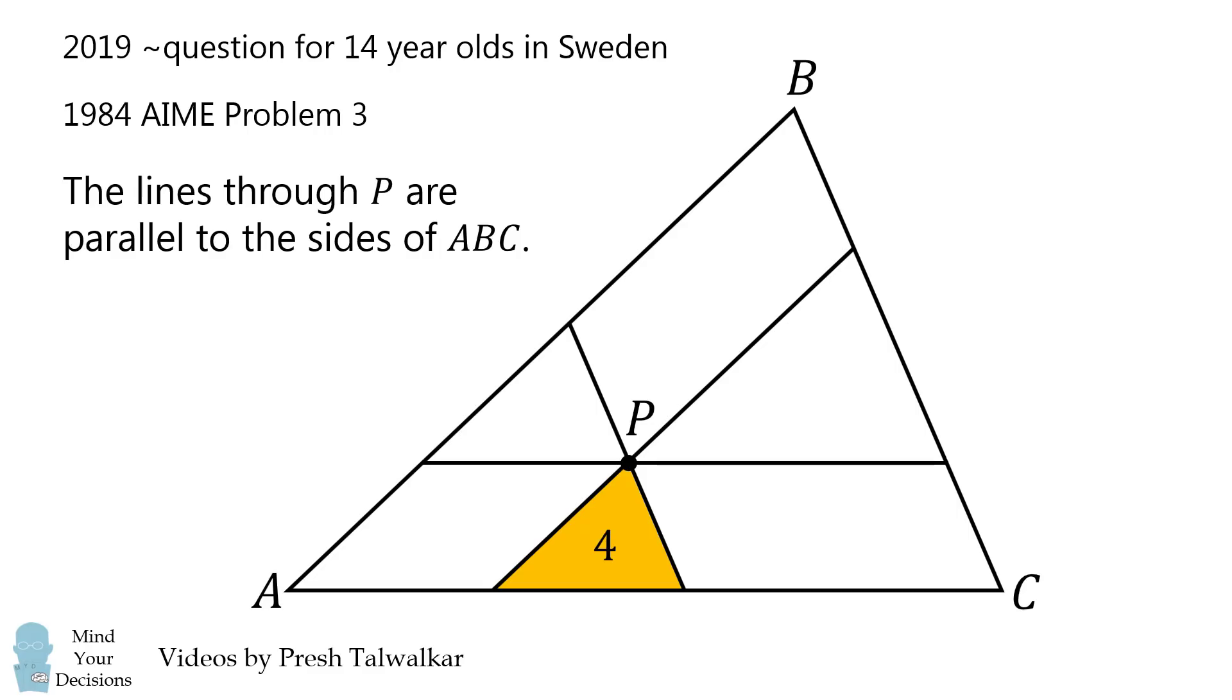Now these triangles have areas of 4, 9, and 49. What is the area of triangle ABC?